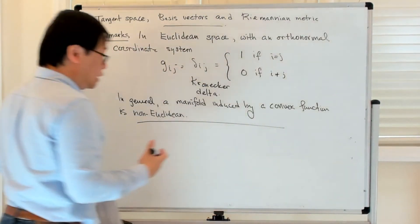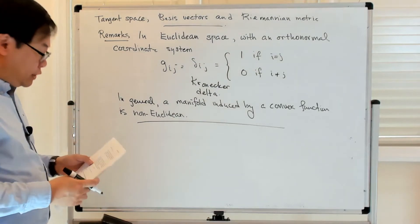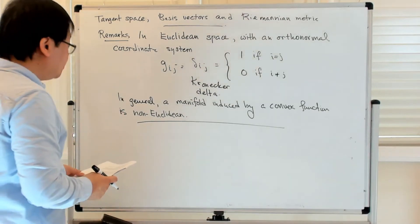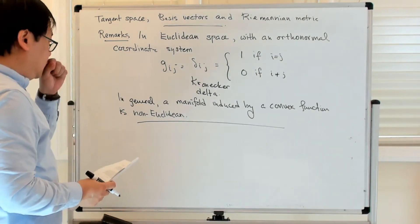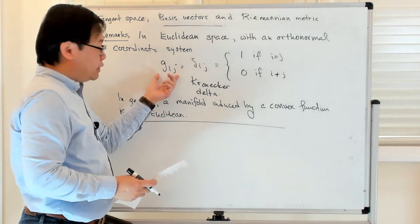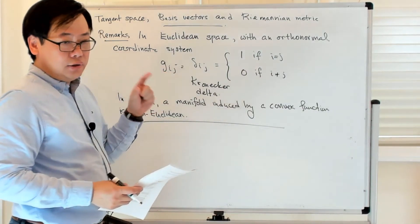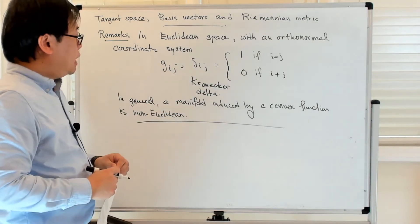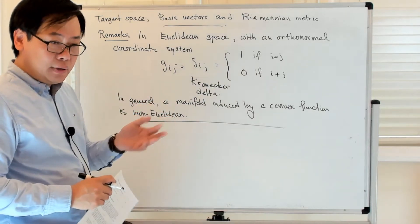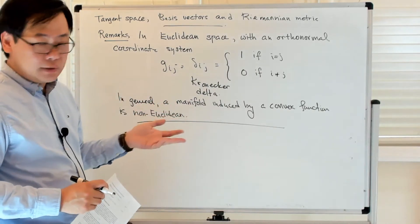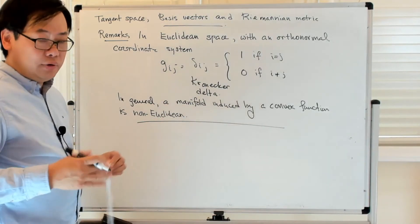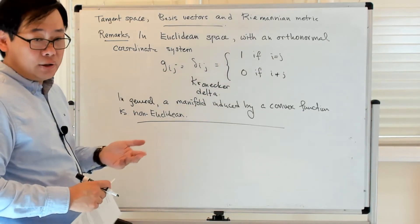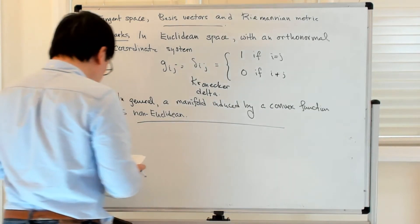The representation of the Riemannian metric as a matrix depends on the choice of coordinates, because the matrix entries are related to the inner product between the basis vectors that span the tangent space — and those basis vectors depend on the coordinate system. For different coordinate systems you will have different matrix representations of the Riemannian metric.